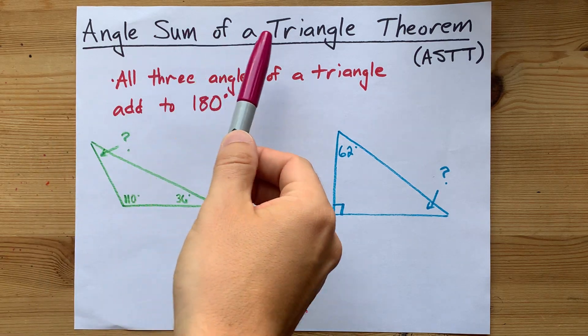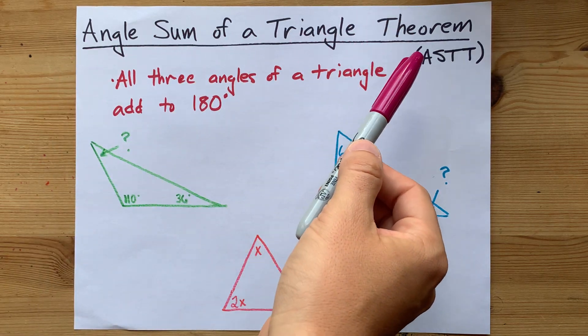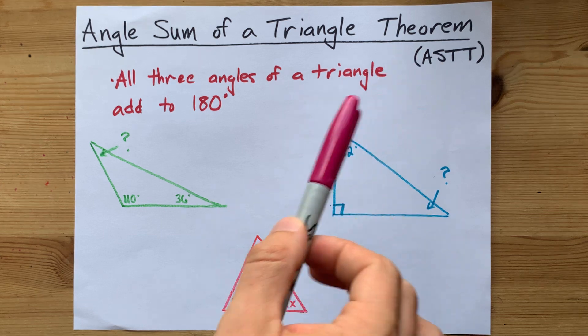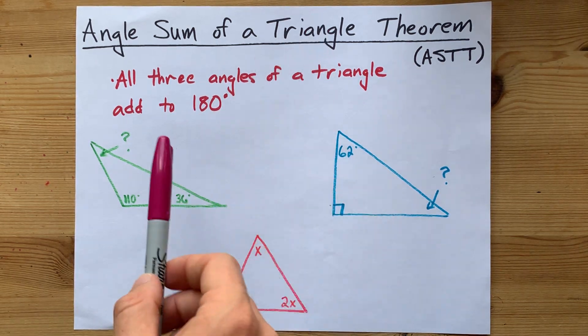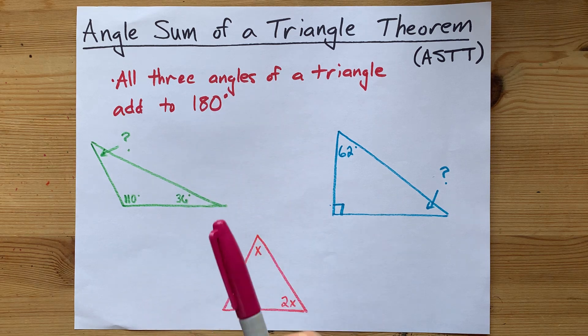The angle sum of a triangle theorem, or ASTT, is the fancy math way of saying that all three angles of a triangle together will add to 180 degrees.